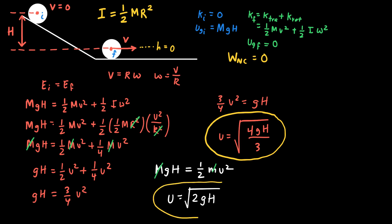And so now what I'd like to do is to compare these two equations. For the block, where there's no rotational kinetic energy, the speed is the square root of two gh. But for the rotating object, which has translational and rotational kinetic energy, it's only the square root of four-thirds gh. And so the speed is less in the case for the rotating object. So why is that?